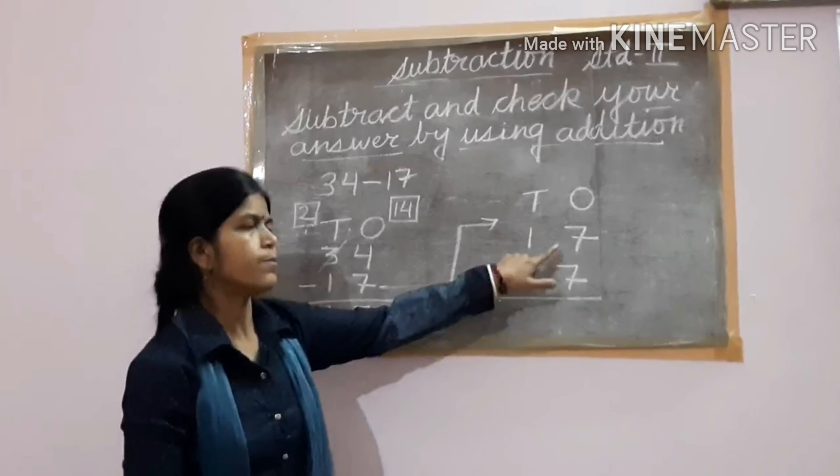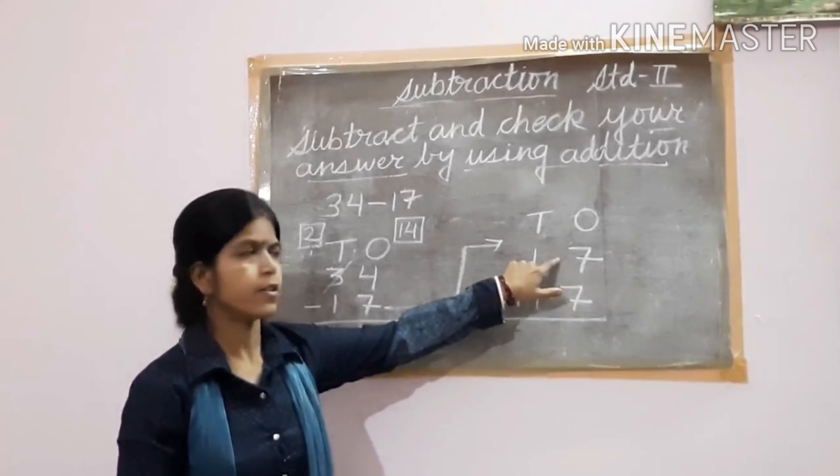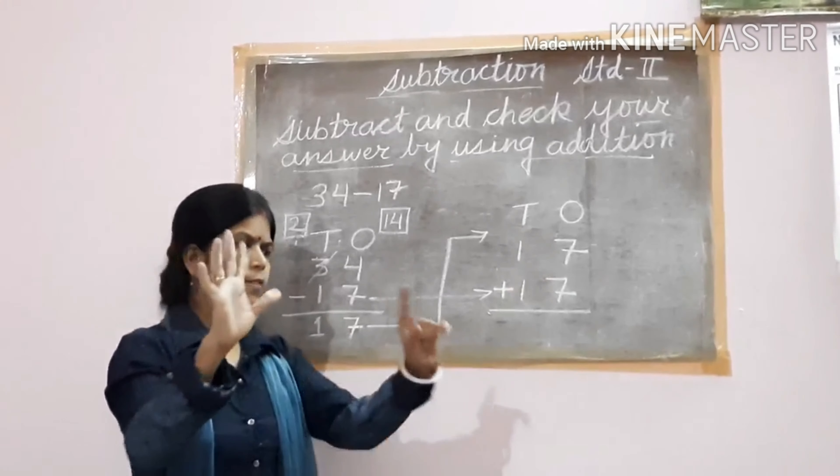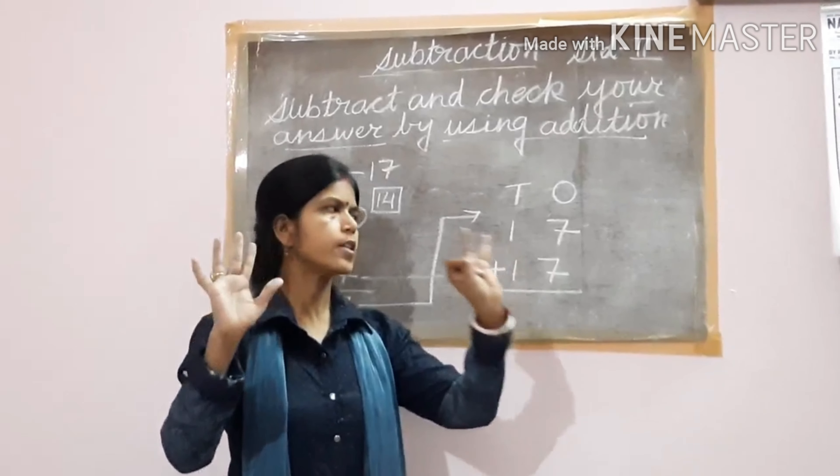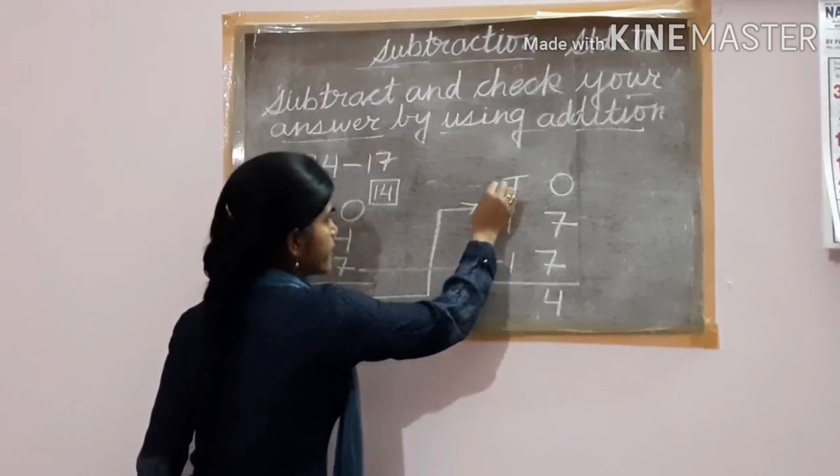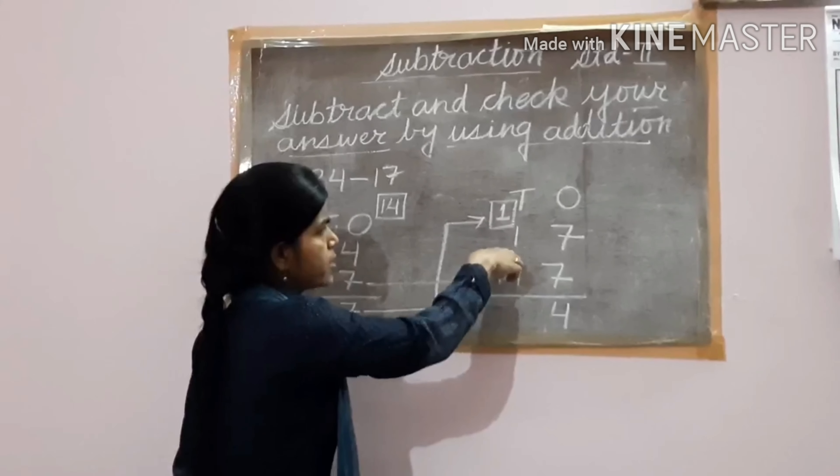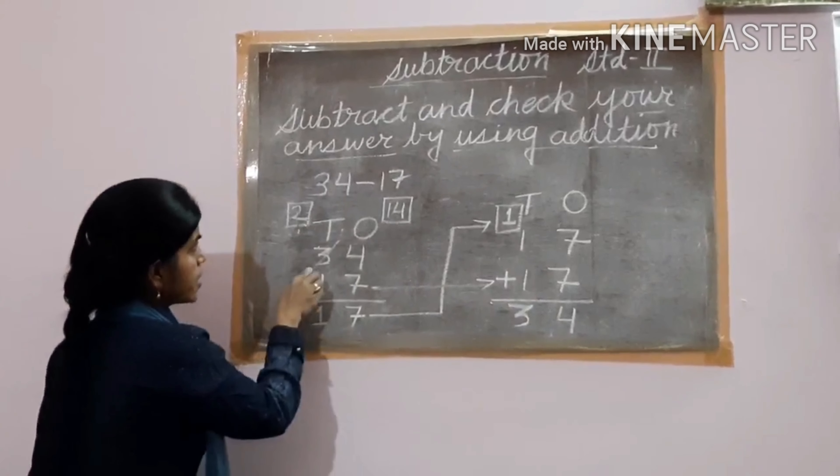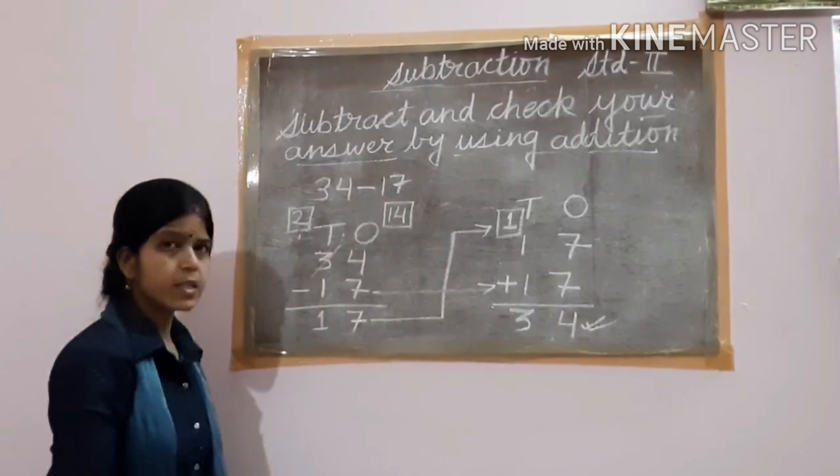So how to do? Some children, they are very smart, they can say 14. Those who don't know, you can count on your finger. Count after 7: 8, 9, 10, 11, 12, 13, 14. So 14 means 4 ones and 1 ten. Here, carry over. Then 1 ten plus 1 ten, 2 tens plus 1, that is 3 tens. 34. So can you see here? 34, and here also you are getting the 34. So your answer is correct.